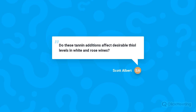Scott Albert asks whether tannin additions affect desirable thiol levels in white and rosé wines. In white and rosé wines, you may bind some desirable thiols — tannins are not selective for just the undesirable ones. For a thiol-driven variety like Sauvignon Blanc, you'd be weighing the trade-off: dealing with existing reduction versus the potential loss of some desirable thiols. Bench trials are the best approach to assess this before treating at scale. Rosés generally have fewer thiols, so the concern is lower there.